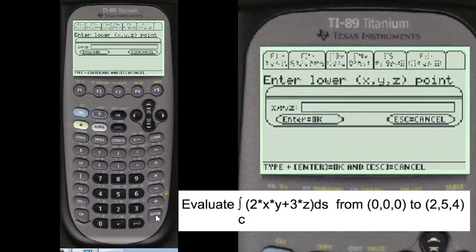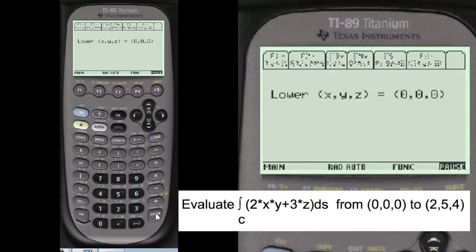And we're going to enter our lower point from the problem. We're going to press alpha, 0, comma, 0, comma, 0. I say it's okay.